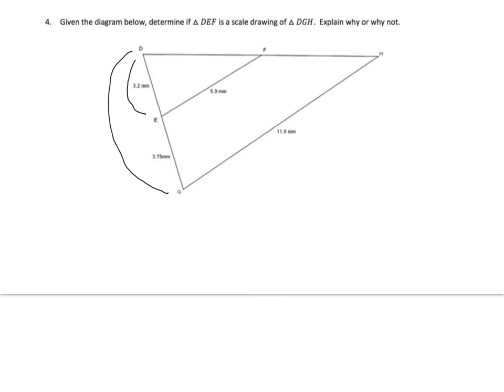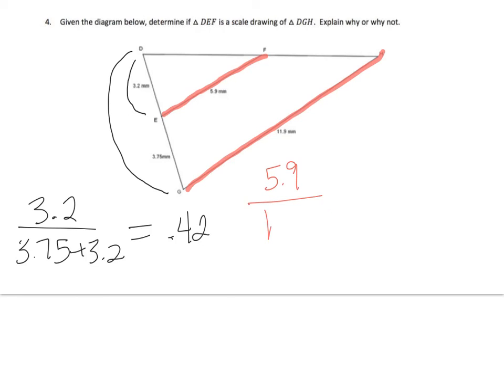It says DEF is a scale drawing of DGH, so things should get smaller. That means we need to make sure we do the division in the right order so I do 3.2 over 3.75 plus 3.2, do that division and I get 0.46 is my scale factor which I could put into a fraction but we're okay with decimals. Now let's check this one. These lines should also be proportional.